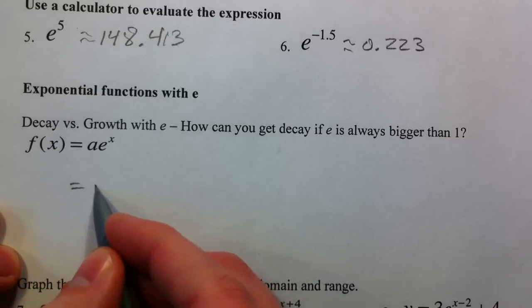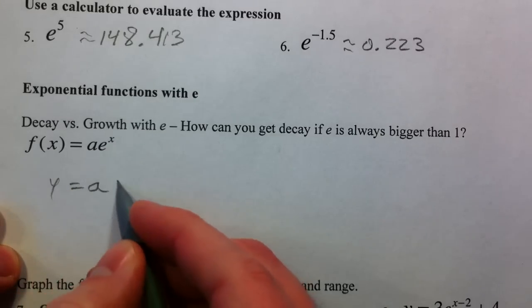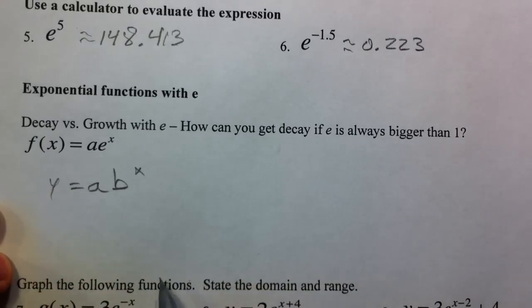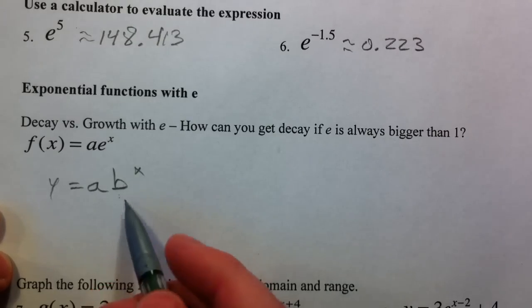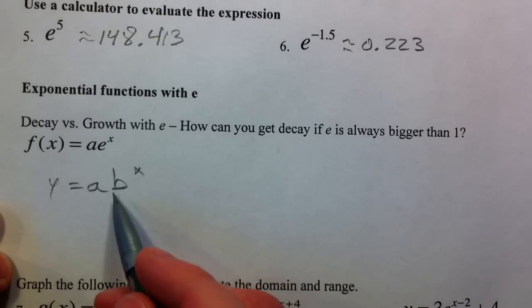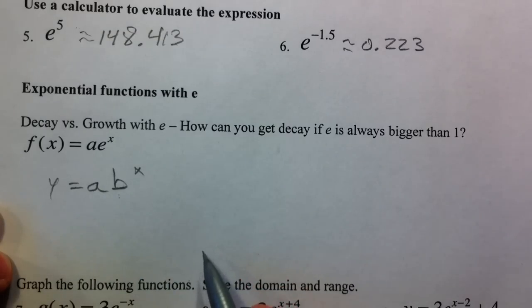Before we were dealing with y equals a times b to the x, and the b determined whether we had growth or decay. So if b was bigger than 1, it was growing. If b was less than 1, it was decay.